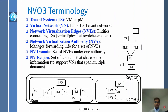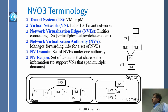NVO3 has developed specific terminology. A tenant system is a VM or a PM. A virtual network is an L2 or L3 tenant network. NVE — Network Virtualization Edge — refers to the entities that connect tenant systems. For example, an NVE connects tenant systems, which could be physical machines or virtual machines depending on what the tenant owns.